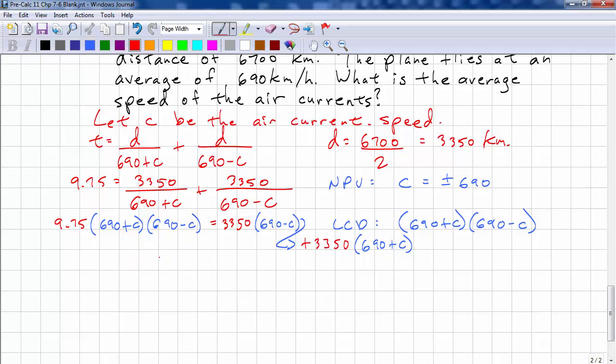We need to expand all of this. This is a difference of squares. So, we have 9.75 times 690 squared minus C squared. And here we have, we have a plus C and a minus C. Those will cancel out.